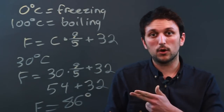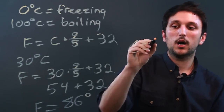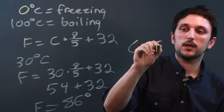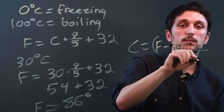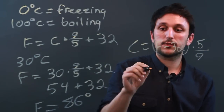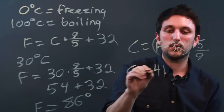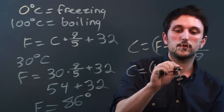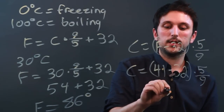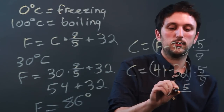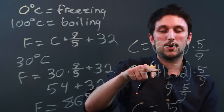Now if we want to convert back from Fahrenheit to Celsius, we say C equals (F minus 32) times 5/9. Now let's say we have 41 degrees Fahrenheit. So we can say C equals 41 minus 32 times 5/9. 41 minus 32 is 9, times 5/9 is 5. So Celsius equals 5 degrees when Fahrenheit is 41.